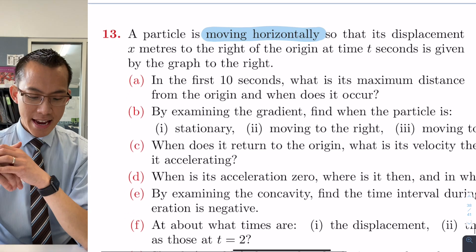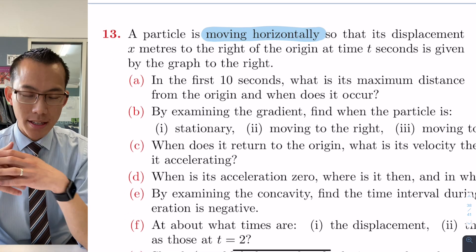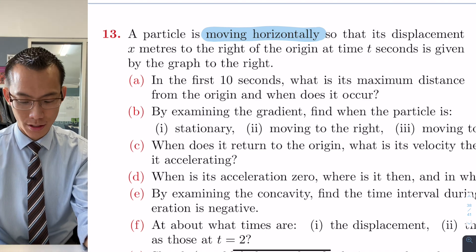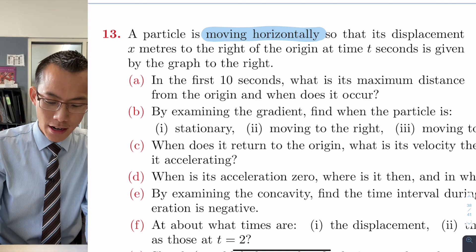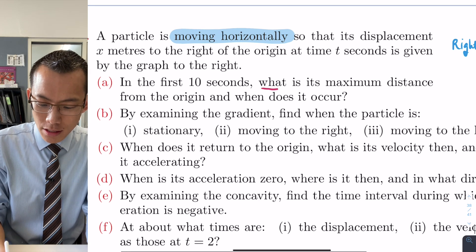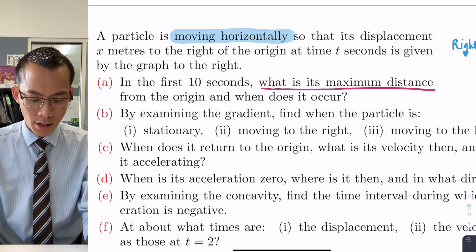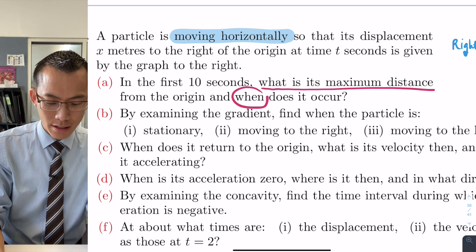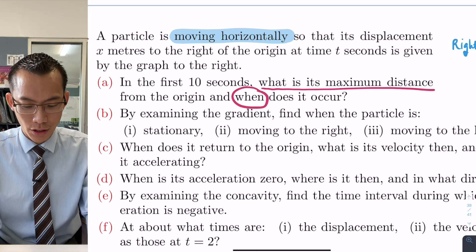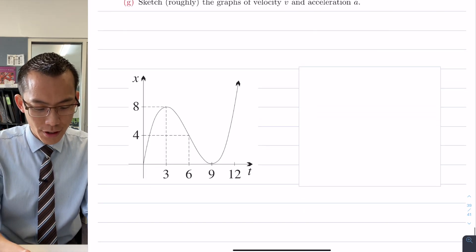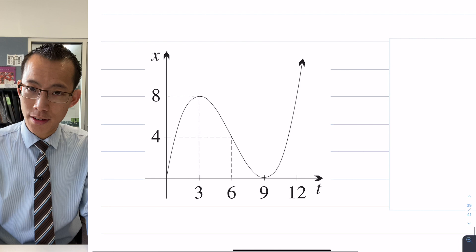Alright so the first question says, in the first 10 seconds, what is its maximum distance from the origin and when does it occur? So there's two questions there. Number one, what is its maximum distance? So that's going to be a displacement unit of some kind, and then the next question is when does it occur? So we're going to have to have a time that goes with this.